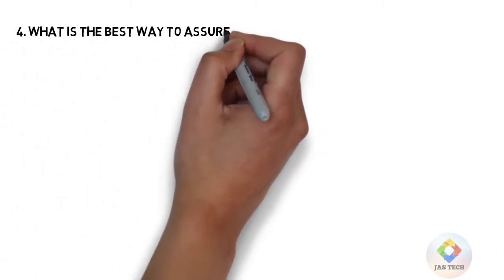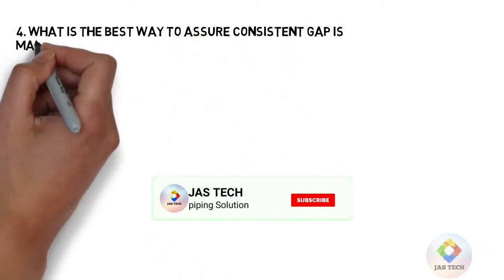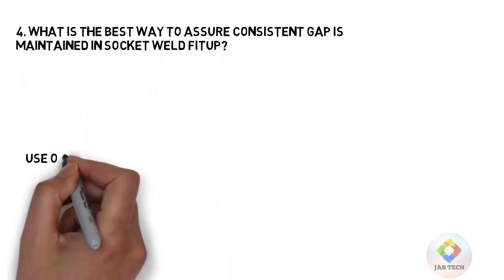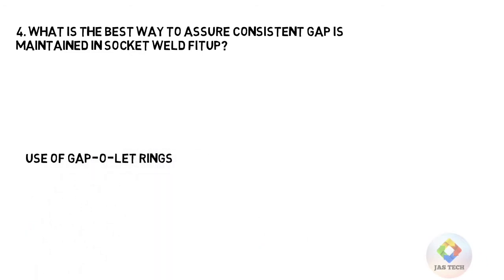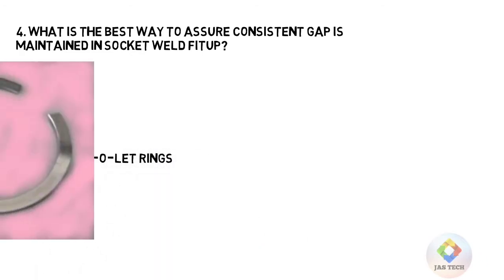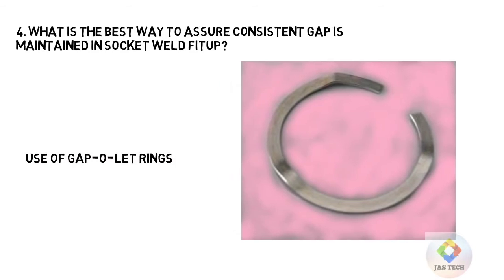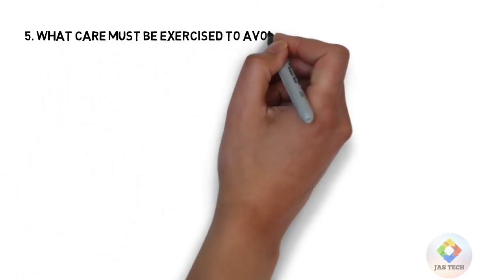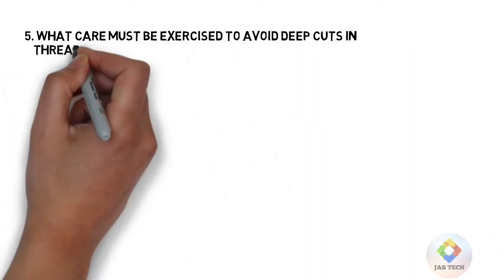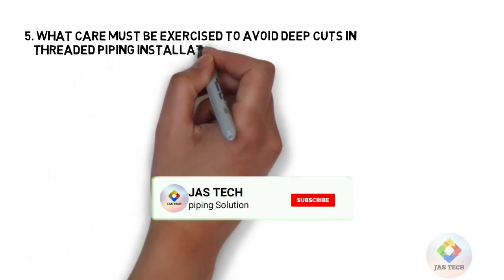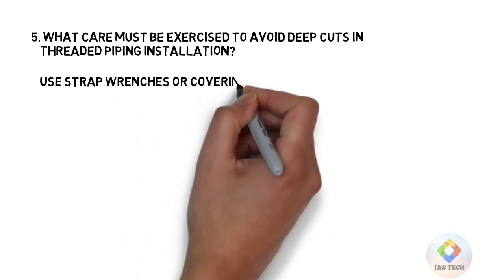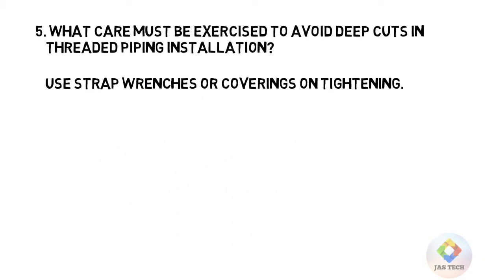Q4: What is the best way to assure consistent gap is maintained in socket weld fit-up? Q5: What care must be exercised to avoid deep cuts in threaded piping installation? Use strap, ring chairs, or covering on tightening.